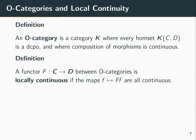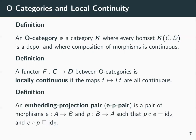A functor is locally continuous if its action on morphisms is continuous. An embedding-projection pair is a pair of morphisms E from A to B and P from B to A such that the composition P after E is the identity on A, and the composition E after P is less than or equal to the identity on B.